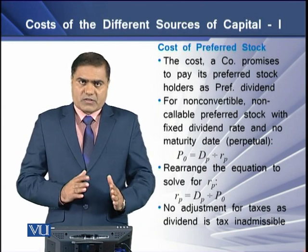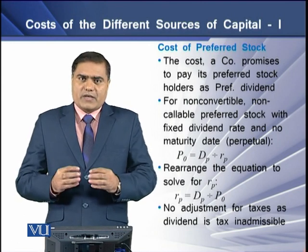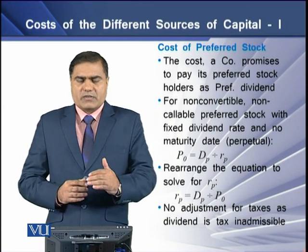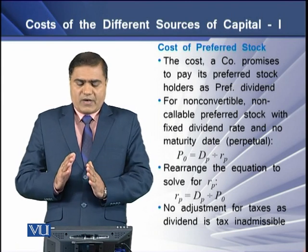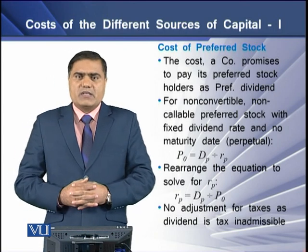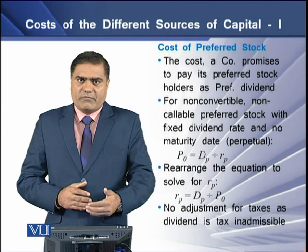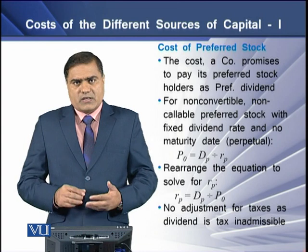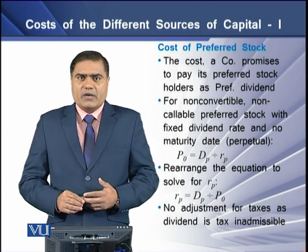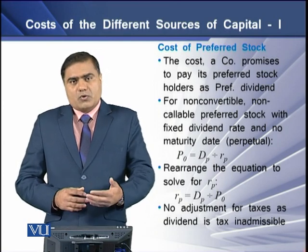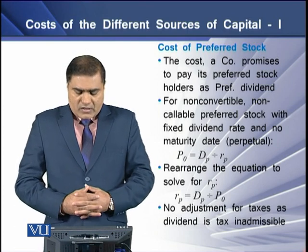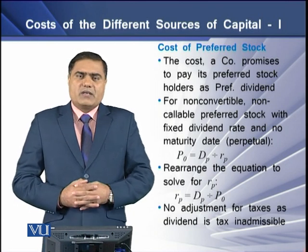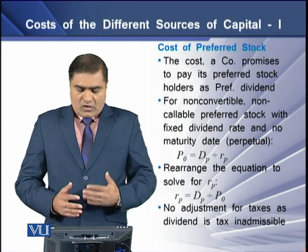For non-convertible, non-callable preferred stock with a fixed dividend rate and no maturity date, the dividend payment will continue in perpetuity. To determine the cost of such preferred stock, we divide the dividend amount by the dividend rate, which gives the current market price of the share. Rearranging the model, we divide the dividend by the market price of the preferred share, and the resulting figure is the cost of preferred stock, denoted RP.